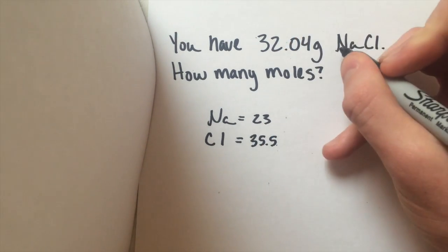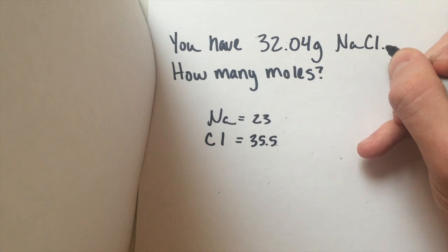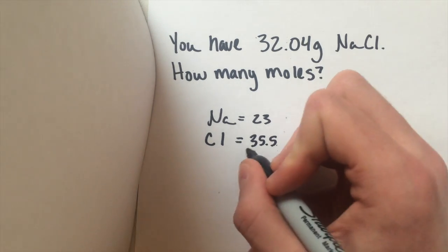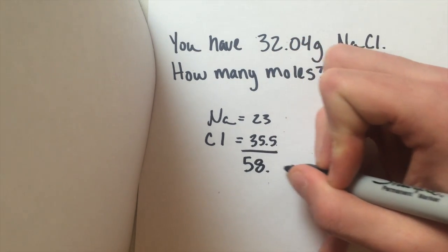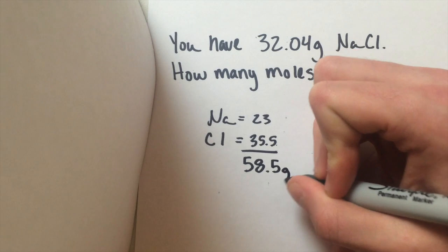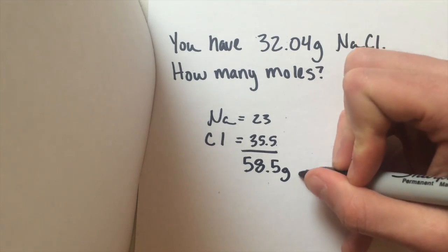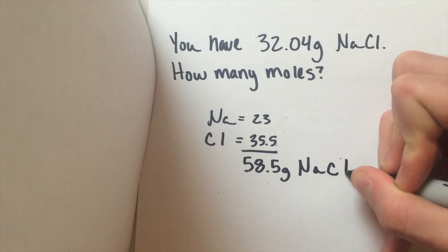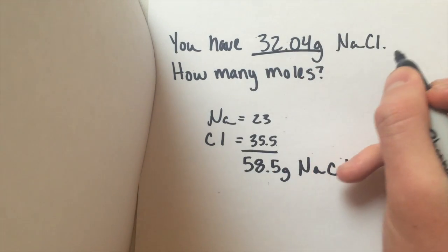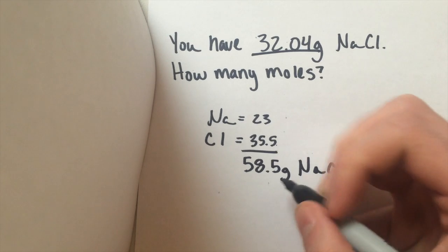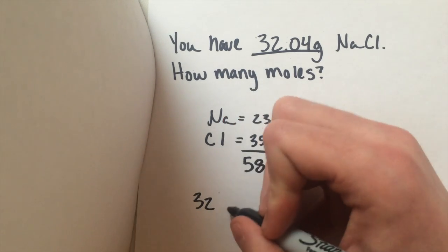So since there's just one of each, the molecular weight for this is going to be 58.5 grams for sodium chloride. Now you simply take your starting weight, divide it by your molecular weight, and you will have your moles.